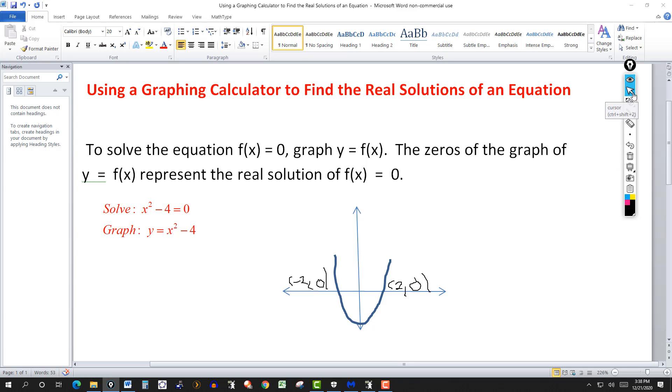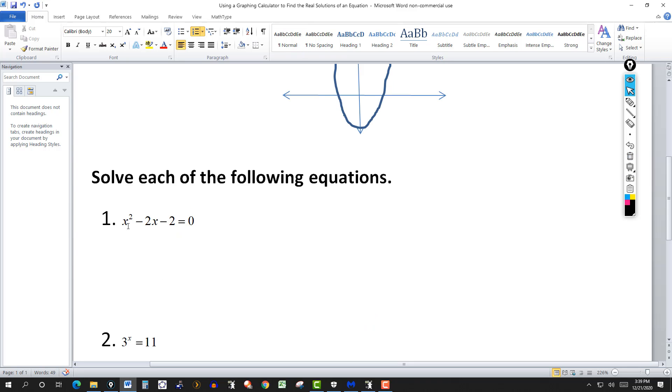So let's clear this. Let's look at this one right here, x² - 2x - 2 = 0. We want to solve this. And this one we could solve it, doesn't factor directly, so we could solve it using the quadratic formula or the method of completing the square. But we're doing this using the graphing calculator for now. So let's get the graphing calculator out here.